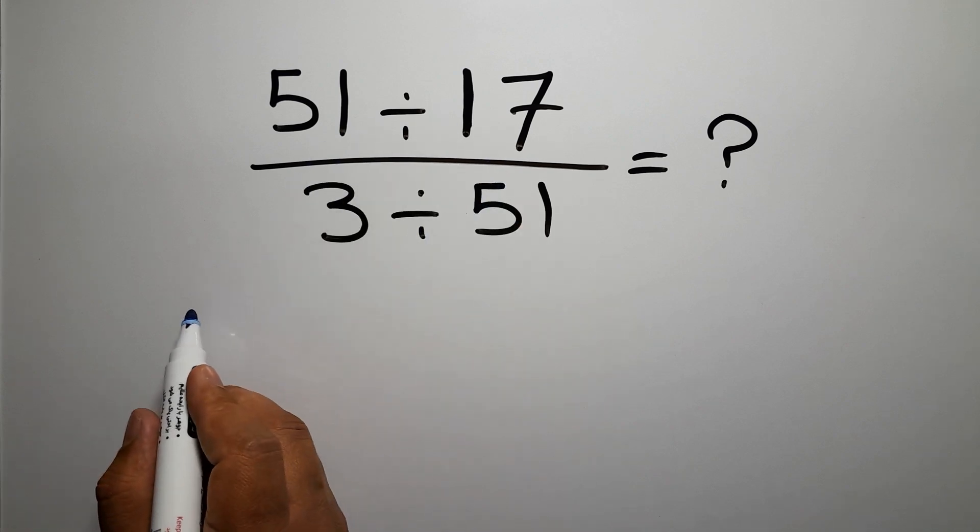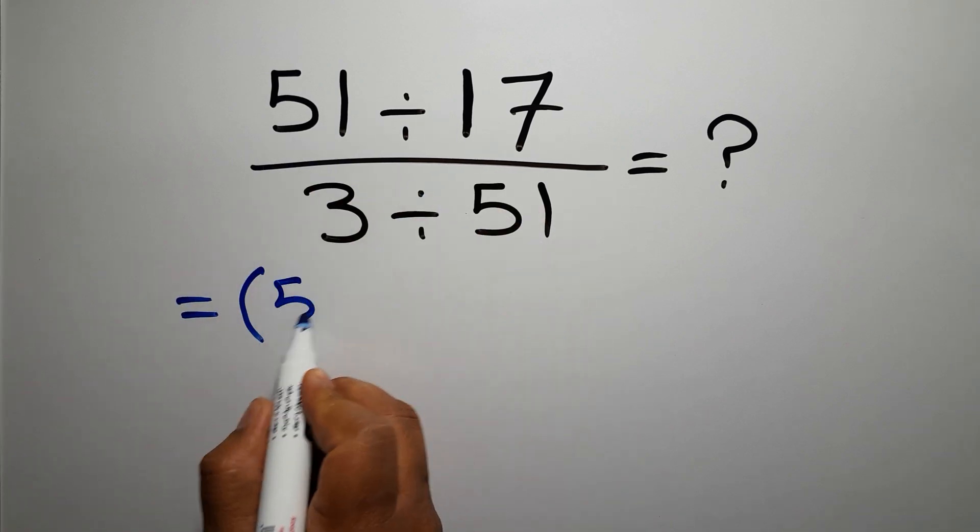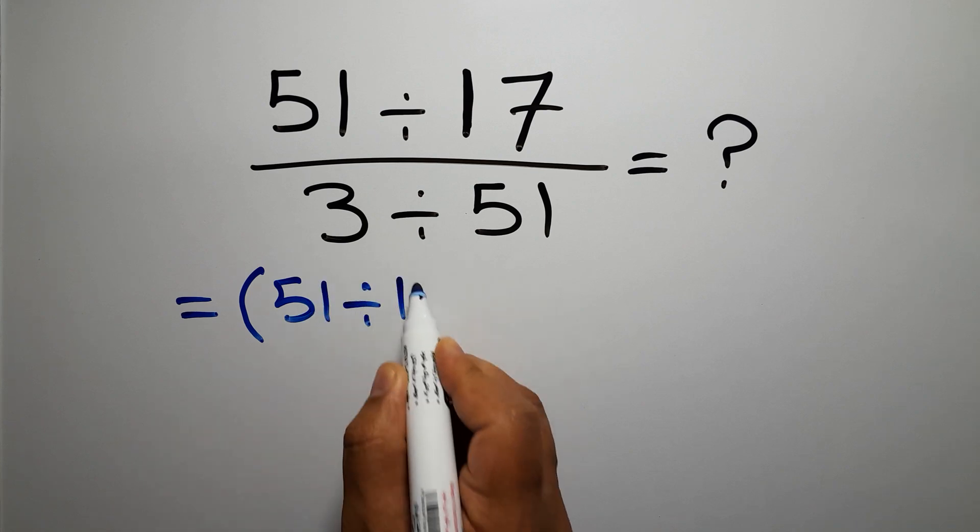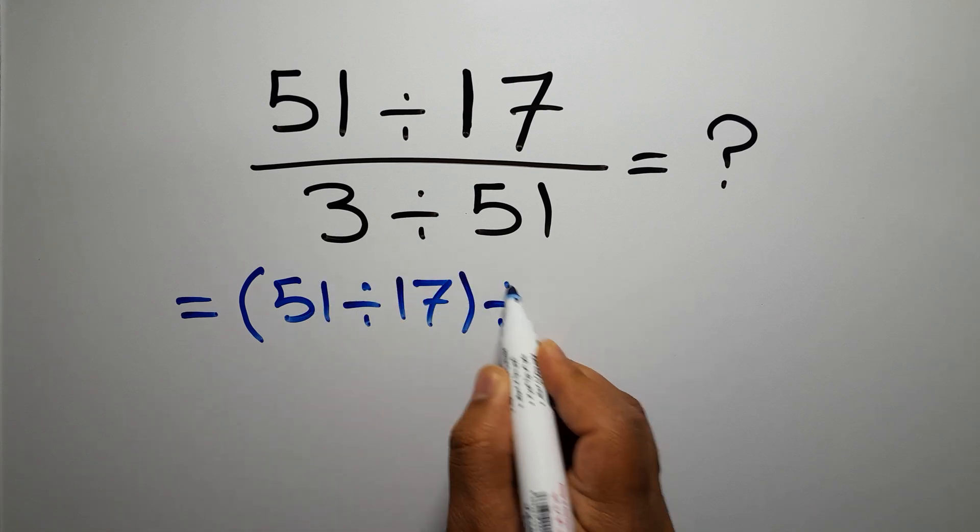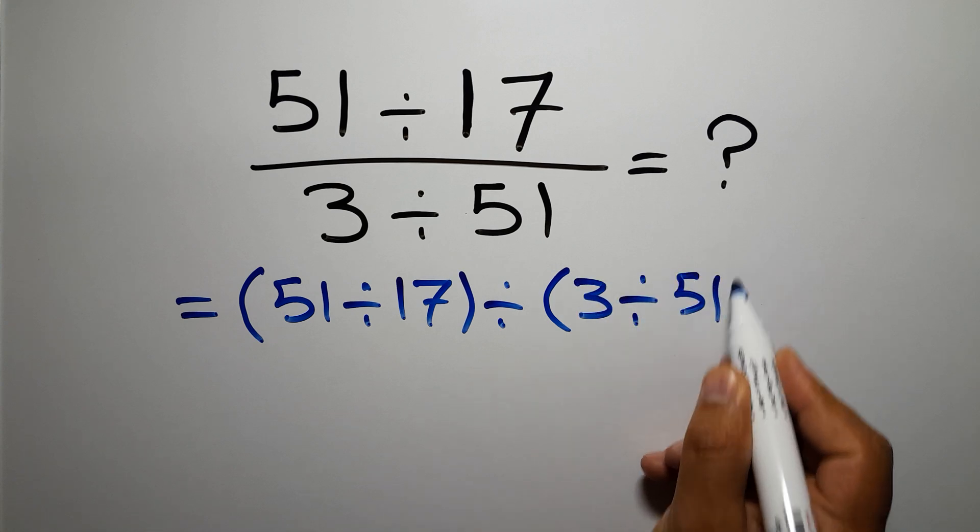Instead of this fraction, we can write parentheses: the numerator, 51 divided by 17, divided by denominator, 3 divided by 51. Now we have two parentheses and one division.